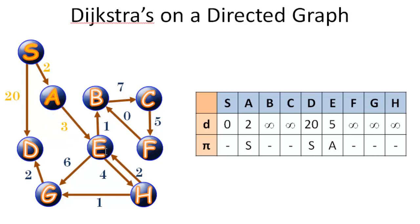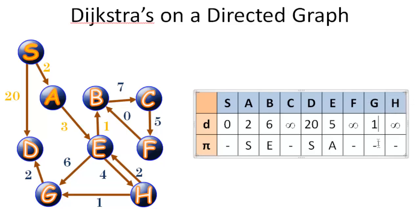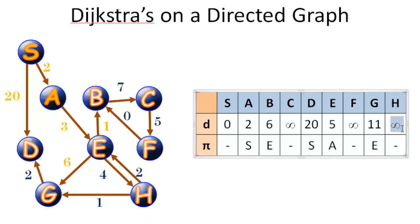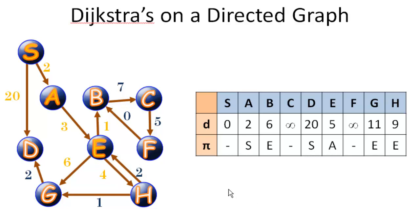We'll visit vertex E, the next closest vertex to the source at a distance of five. E has three outbound edges to G, H, and B. Starting alphabetically with EB at weight one: we reach E in five, so we can reach B in six from vertex E. Next, edge EG has weight six — it takes five to reach E, so we can reach G in eleven; we accept that and mark E as predecessor for G. Finally, EH has weight four: we can reach H in nine coming from vertex E.